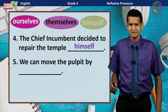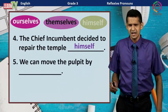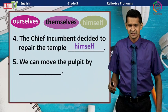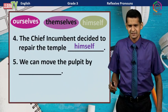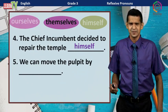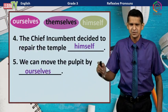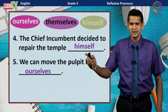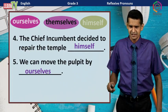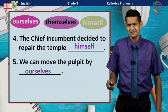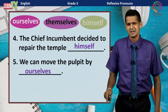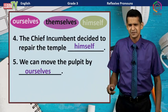Number five: We can move the pulpit by ___. The answer is 'ourselves.' We can move the pulpit by ourselves. That is why we use 'by plus reflexive pronoun' there.